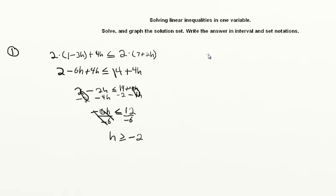Let me discuss why the sign changes. We all know that three is greater than one. If we multiply each side by negative without changing the sign, we'd get minus three is greater than minus one, and that's not true. If you're in debt one dollar versus in debt three dollars, being in debt one dollar is definitely better — that's the reasoning why we flip the sign.